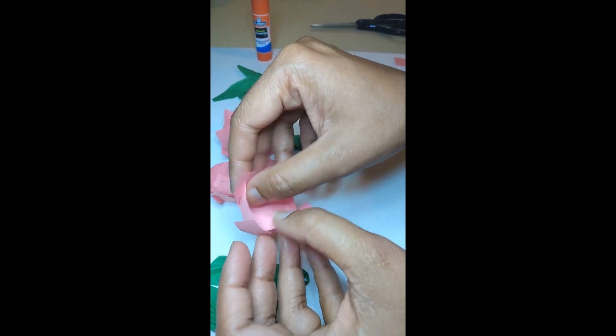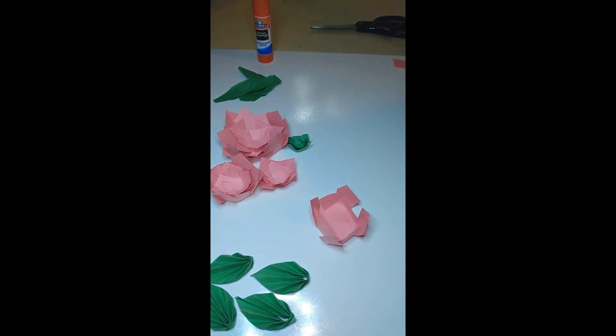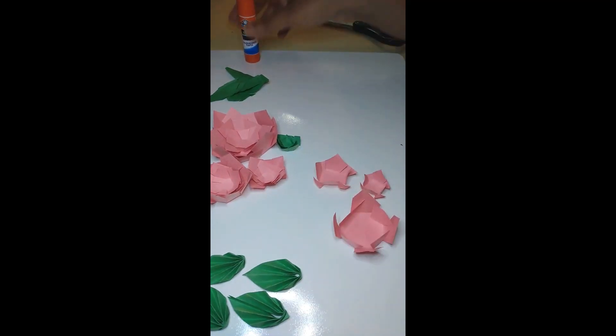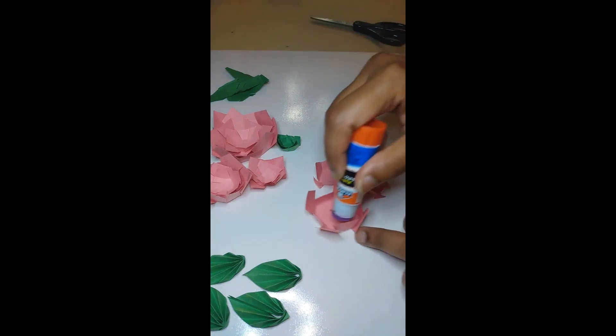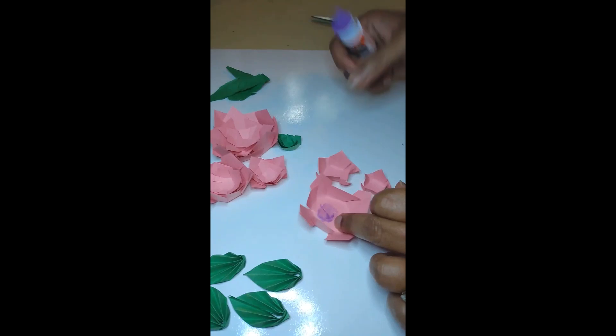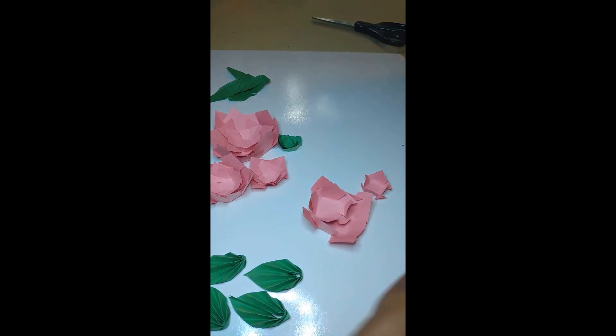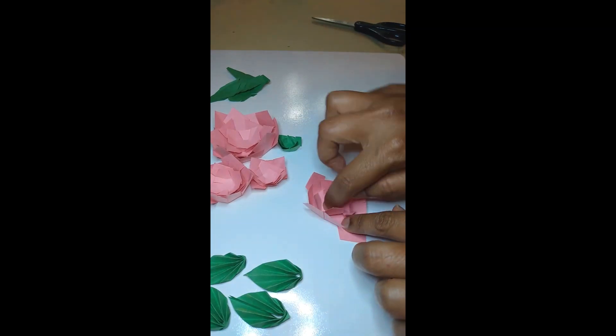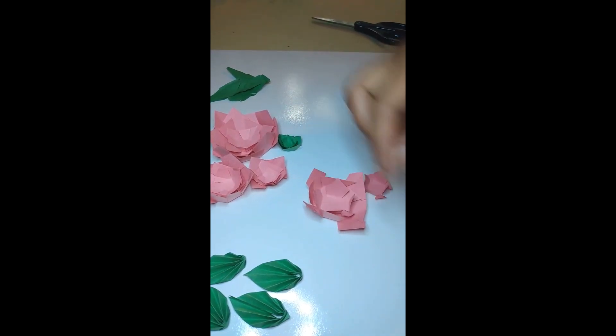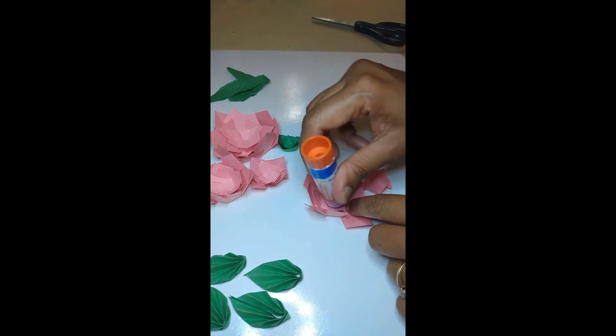You need to fold it to make a flower shape. Now make those flower shapes into three different sizes: large, medium, and small. After that, take the large one, add glue to it, then attach the medium size.